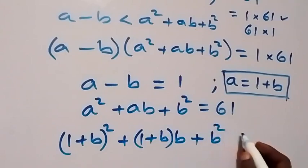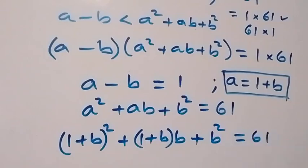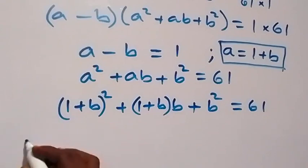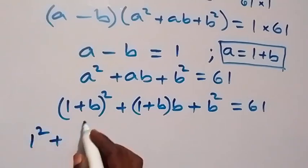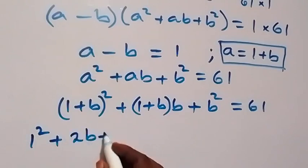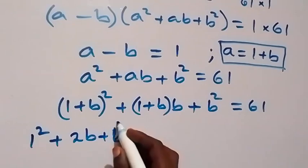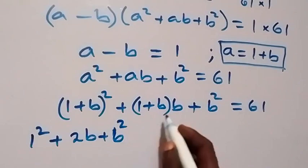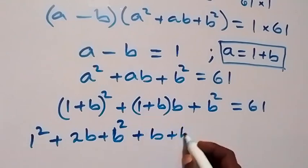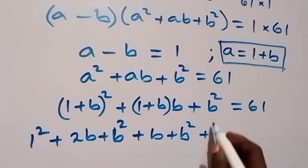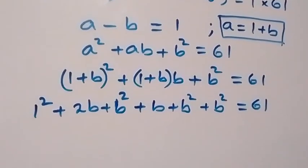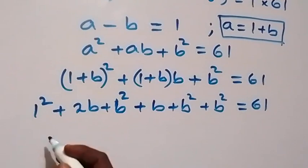Expanding: 1 squared plus 2b plus b squared, then plus b times 1 plus b squared, plus b squared equals 61. That is, expanding 1 plus b squared gives 1 plus 2b plus b squared, and expanding the middle term gives b plus b squared.